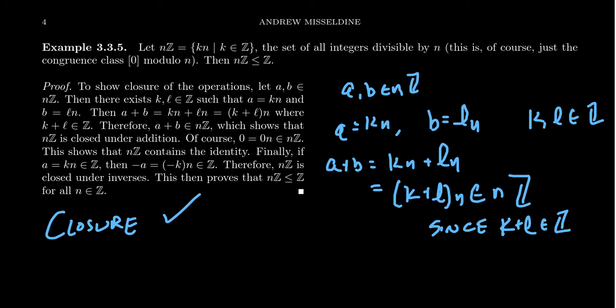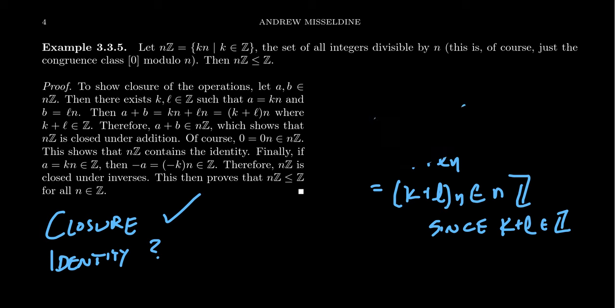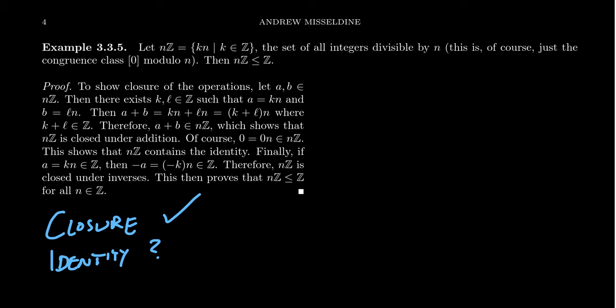This subset is closed under the operation of addition. The next thing to ask is: does it have the identity? Is the identity inside of this? That would be zero — the identity of the group of integers. So what we're determining is whether zero is a member of the set NZ. Notice that zero equals zero times N for any choice of N, and therefore zero belongs to NZ for any integer N.